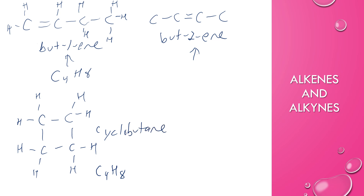All of these are isomers of each other, but cyclobutane is not considered a positional isomer because it has a totally different structure. But-1-ene and but-2-ene are positional isomers because the only difference is the position of the double bond. The same can be true for triple bonds — one triple bond is equivalent to two rings, or you could change a triple bond into a double bond in a ring. So depending on the structure, you can get creative with the different types of structural formulas available.